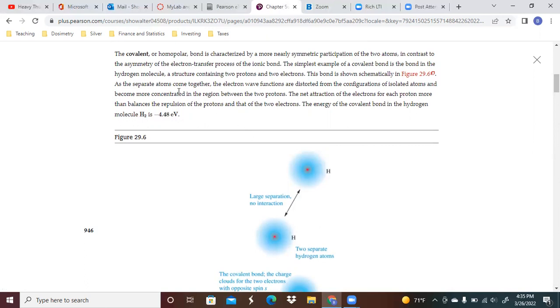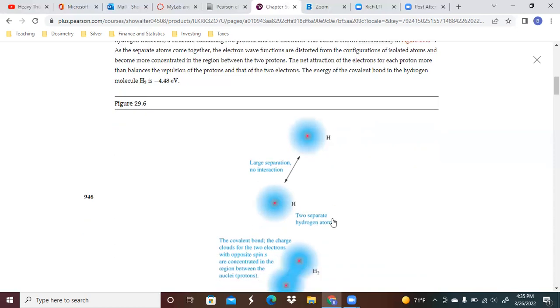As the separate atoms come together, the electron wave functions are distorted from the configurations of isolated atoms and become more concentrated in the regions of the two protons. The net attraction of the electrons for each proton more than balances the repulsion of the protons and that of the two electrons. The energy of the covalent bond is minus 4.4 eV.